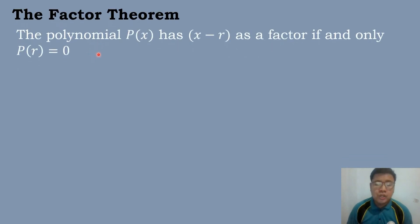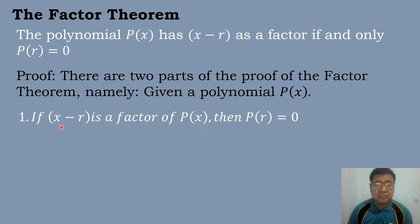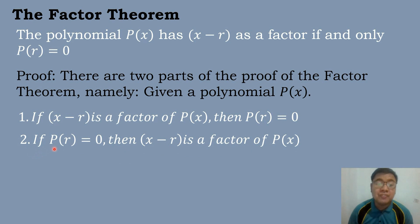Let's have the Factor Theorem. The polynomial P of X has X minus R as a factor if and only if the remainder is equal to 0. There are two parts of the proof of the Factor Theorem. Given a polynomial P of X: number 1, if X minus R is a factor of P of X, then P of R equals 0; and number 2, if P of R equals 0, then X minus R is a factor of P of X.